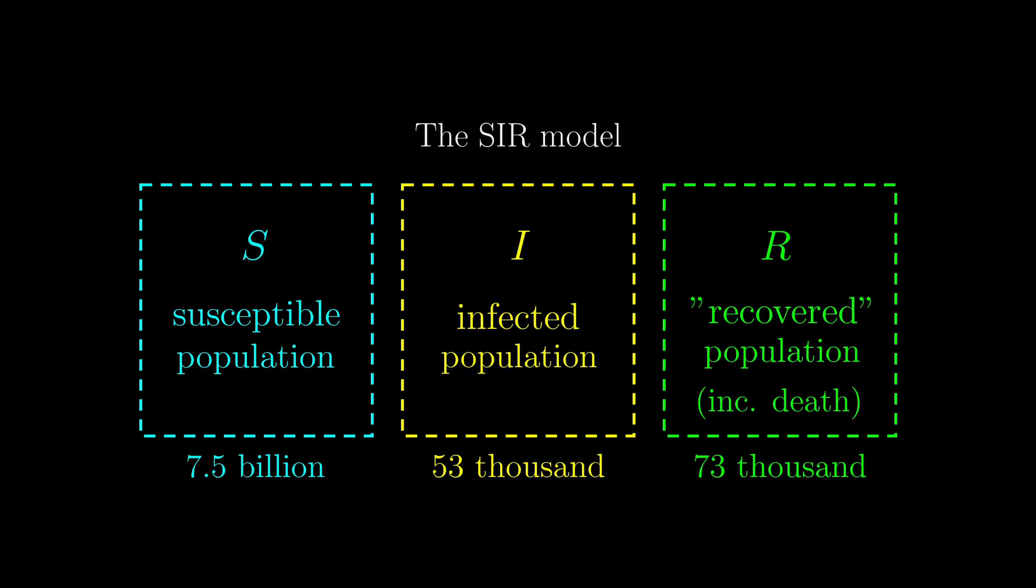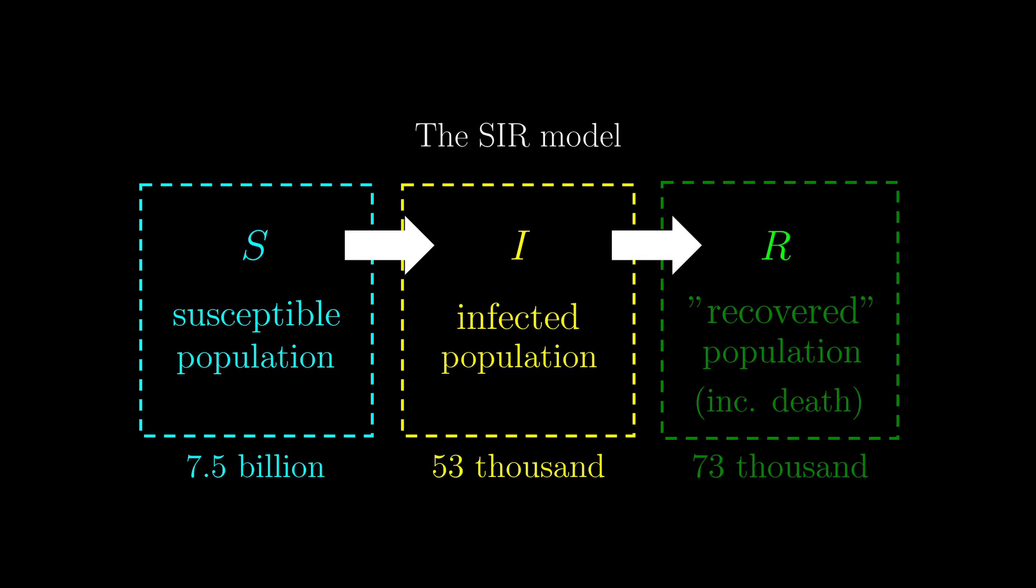Just to be clear, the vast majority of these 73,000 is recovered. For an infection, people first go from being susceptible to being infected, then to the quote-unquote recovered stage. The main reason we put death in this R stage is that whether you recovered or died from the virus, you can't infect others and can't be infected, and this model only cares about the spread of the disease.